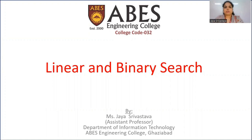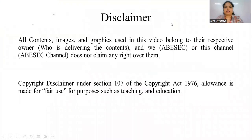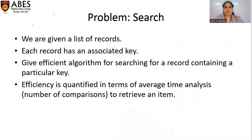The main problem behind this topic is searching an item from any record. There are two ways: first is linear search and second is binary search. In linear search, if we have a given list of records, each record has an associated key. If we give an efficient algorithm for searching for a record containing a particular key, the efficiency of the algorithm is quantified in terms of average time analysis to retrieve an item.